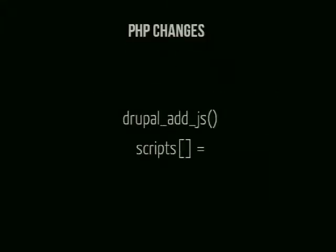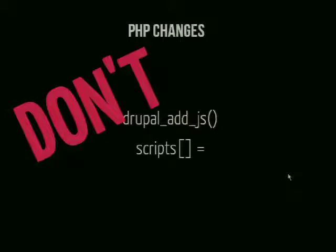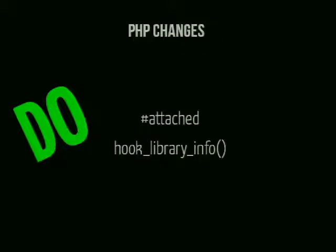For the PHP, there are a few things that change. What we usually see in modules is using drupal_add_js() to put your script file on the page, or using the scripts functionality of the info file. In Drupal 8, don't do that — it will be broken. Right now in Drupal 8 you can't insert a JavaScript file from the info file anymore; we removed that functionality. What you need to use instead is #attached. Whenever you have a render array that needs some JavaScript, use #attached to insert the JavaScript file with it.